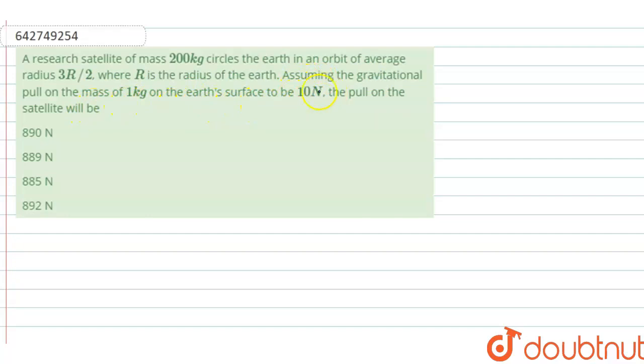Assuming the gravitational pull on the mass of 1 kg on earth's surface to be 10 newton, the pull on the satellite will be?